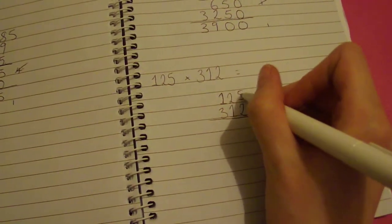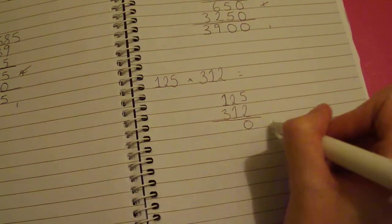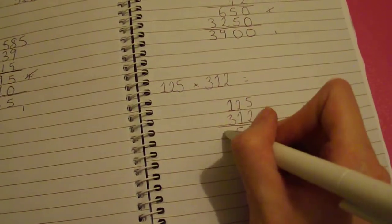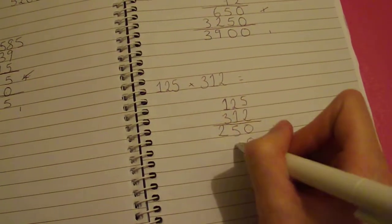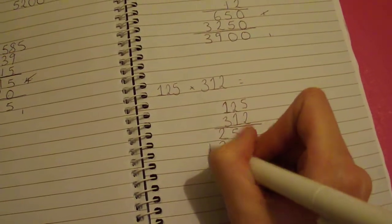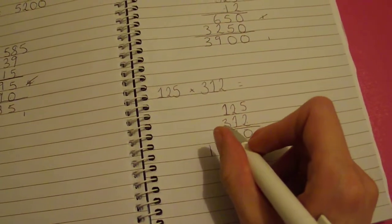2 times 5 is 10. Carry your 1, put your 0. 2 times 2 is 4. Add 1 is 5. 2 times 1 is 2. Add your 0. 1 times 5 is 5. 1 times 2 is 2. 1 times 1 is 1. Add two 0's this time because you're not doing these two numbers. You're doing 3.